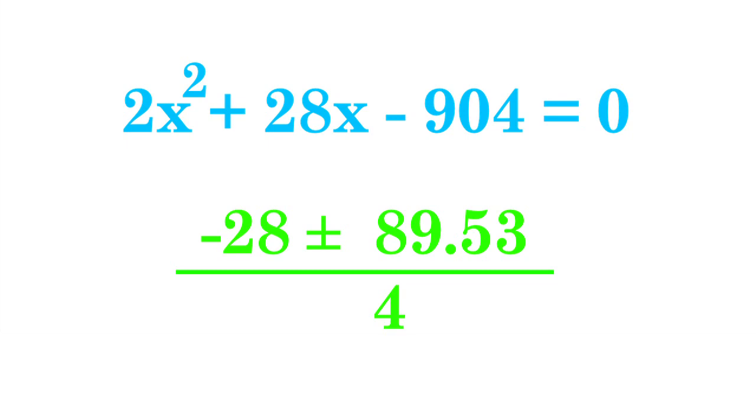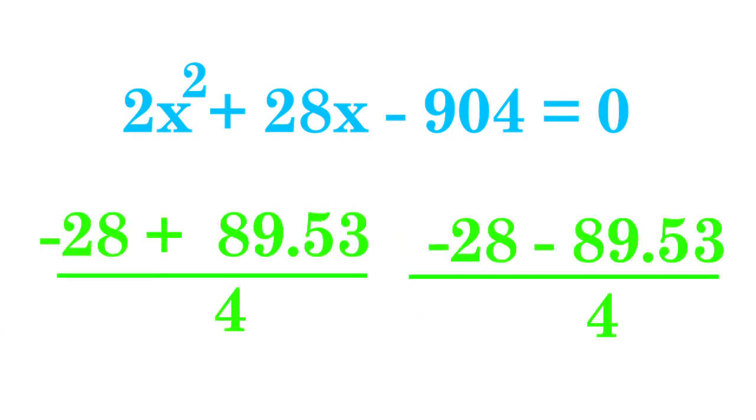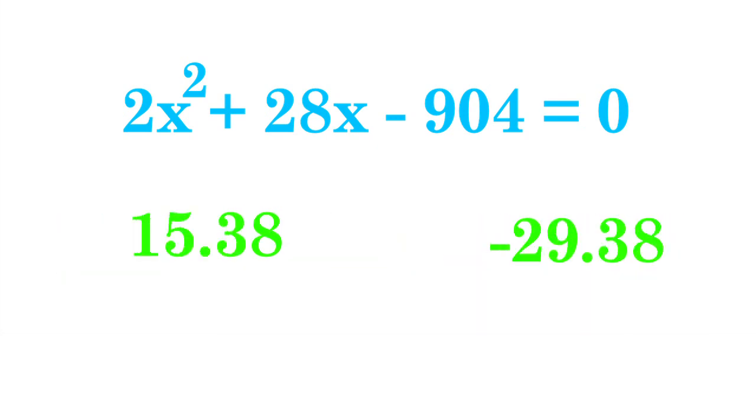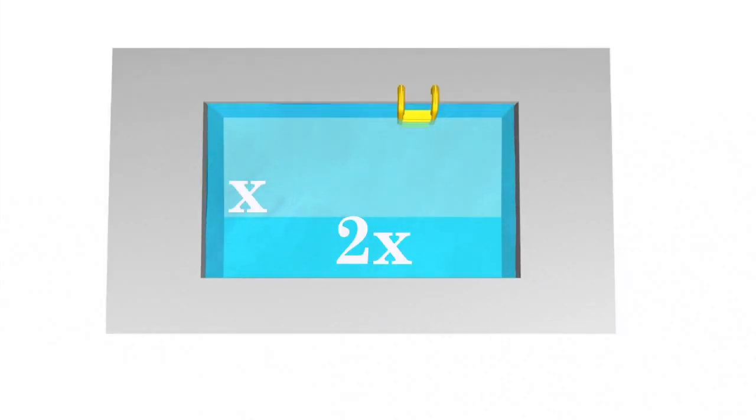Now because we have a plus or minus, this gives us two answers. But we can ignore the negative answer because we're looking for a positive distance. This gives us an answer of x equals 15.38. So that means our pool is going to be 15.38 feet by 30.76 feet.